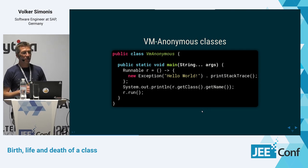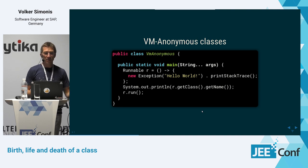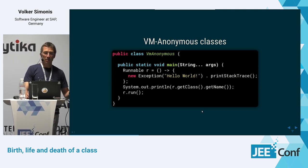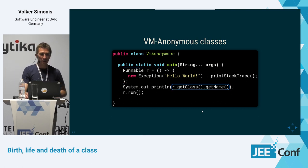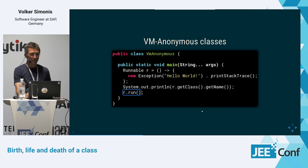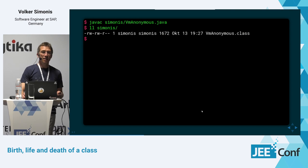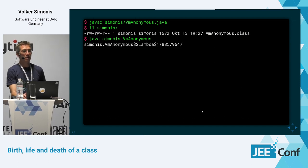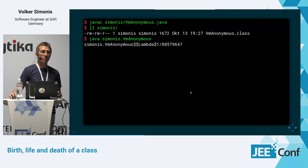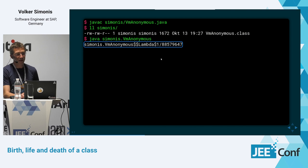Now let's look at VM anonymous classes, which are more interesting and less well known. Java 8 introduced lambdas. We create a Runnable not as an anonymous inner class, but assign it a lambda. This lambda creates an exception and prints the stack trace — we'll see why. We then print the class name of our Runnable and run it. When we compile the VmAnonymous class, we get just one class file. At runtime, the name of our Runnable class turns out to be something like 'VmAnonymous$$Lambda$1' followed by a strange number.